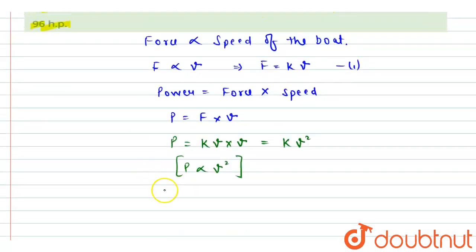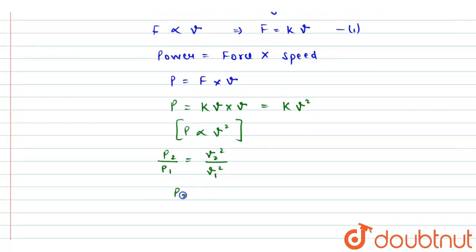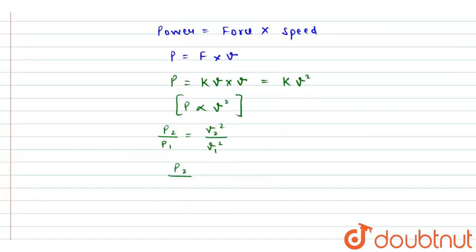We can simply take the ratio. We can write p2 by p1 equals v2 square by v1 square. If I put the values, we will get p2. P2 is the power required and p1 is 24 hp, the initial power.